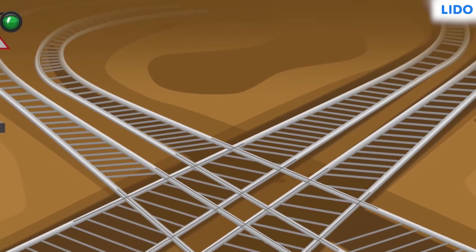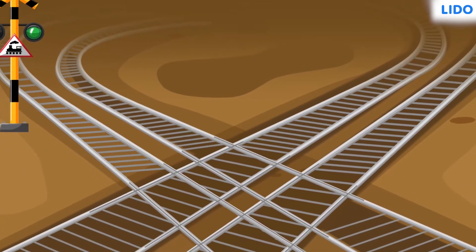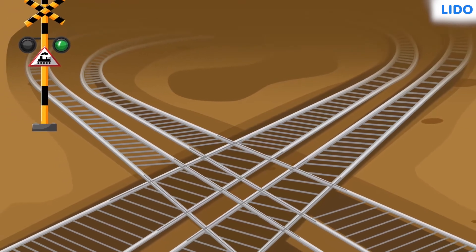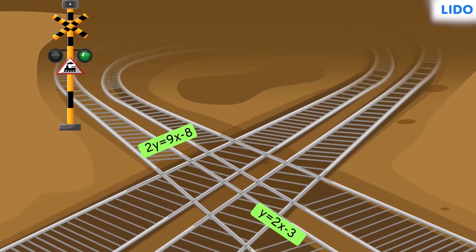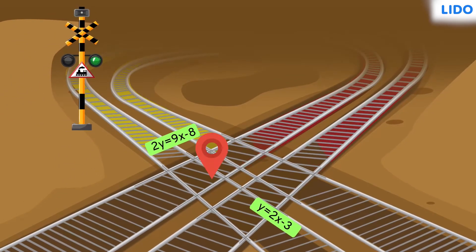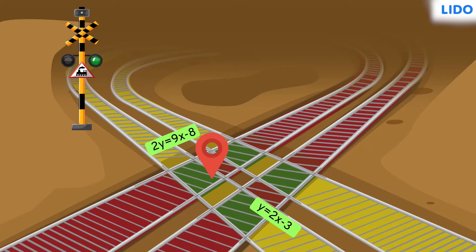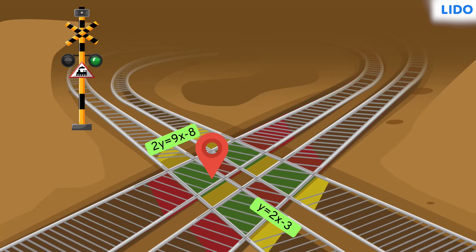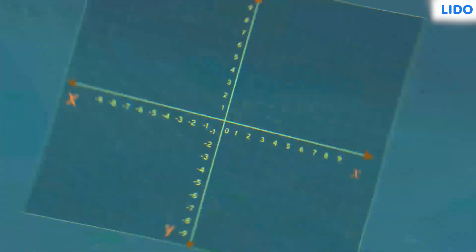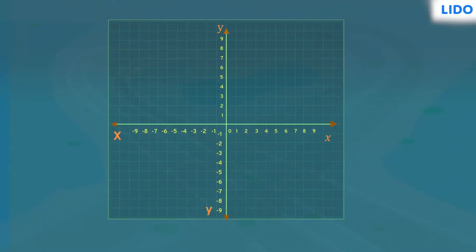Hi there! Have you ever seen intersecting railway tracks? If we represent each of these tracks with equations, is it possible to find the location where the two tracks meet? To find that, we need to figure out how to solve the simultaneous linear equations representing the tracks.